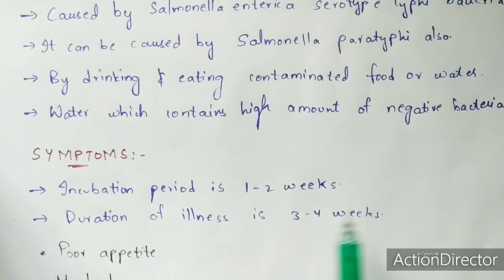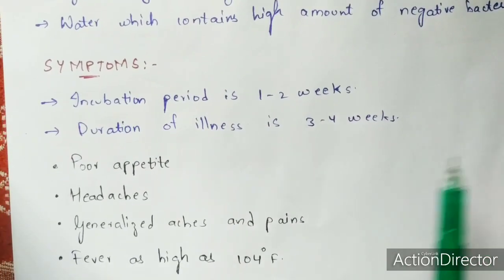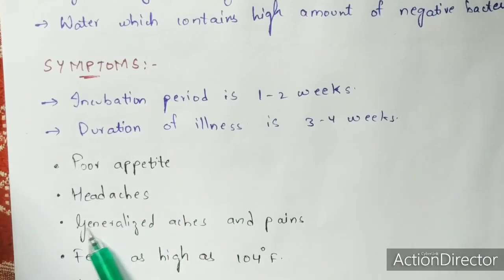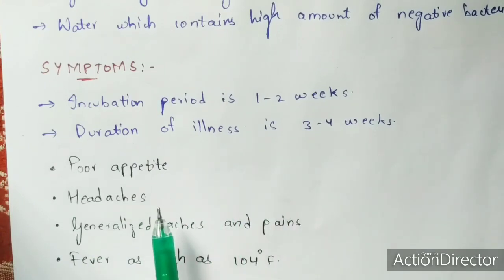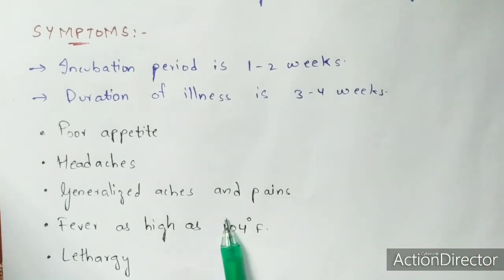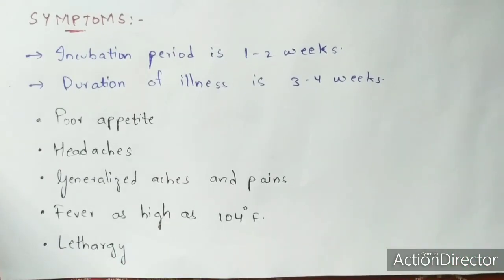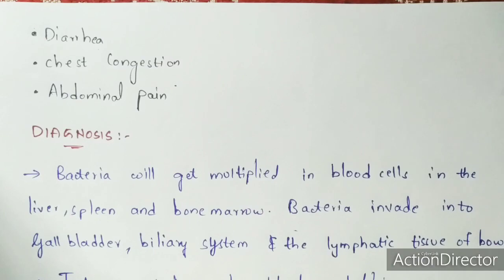The incubation period is one to two weeks, and the duration of illness is three to four weeks. Major symptoms include poor appetite, headaches, generalized aches and pains, and fever as high as 104 degrees Fahrenheit in severe cases — compared to 99 to 100 degrees Fahrenheit in mild cases. Severe cases require hospitalization and can in some cases lead to death. Other symptoms include lethargy, diarrhea, chest congestion, and abdominal pain.